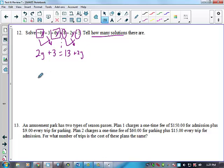Now what can I do? Subtract 2Y from both sides. So when I do that, they both cancel. So what am I left with? 3 equals 13. It is not true. And that's not true, right? So if it's not true, what does that mean? No solution. No solution.